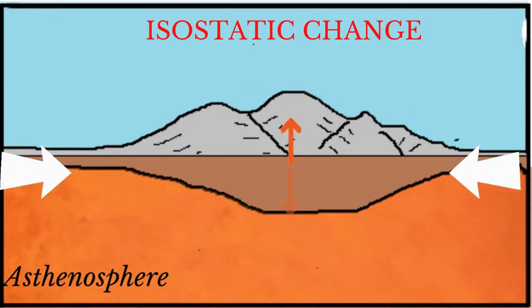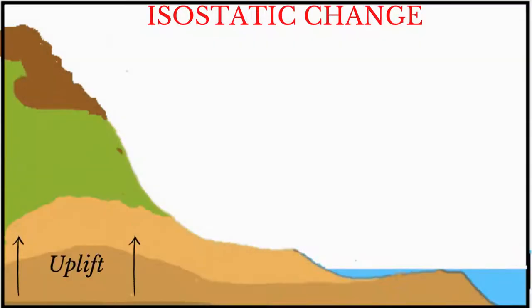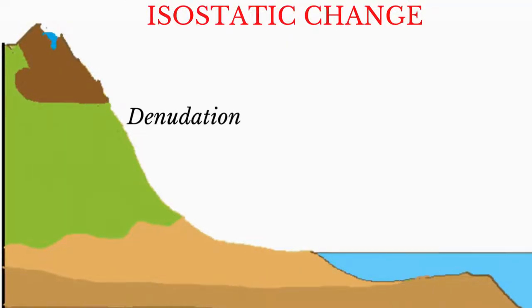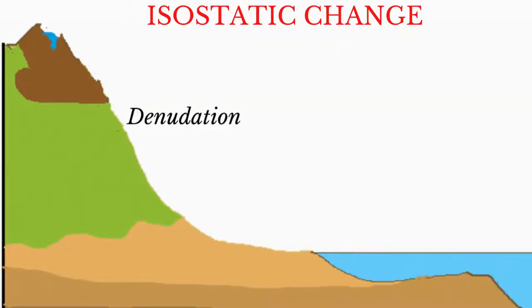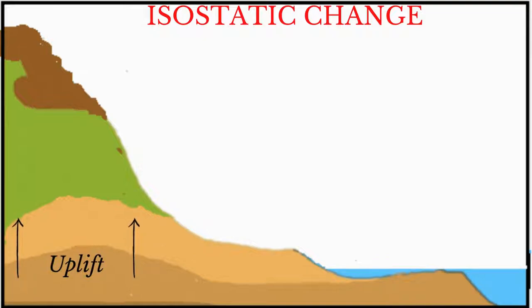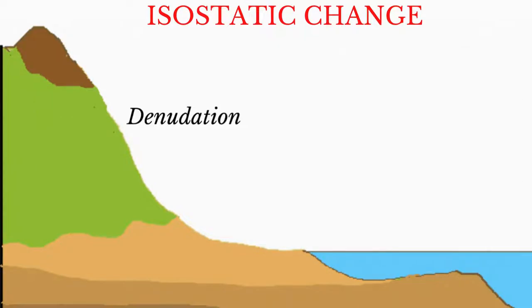Isostatic change also results from plate tectonics. For example, at convergent plate margins, sediments at the edge of continental plates are compressed and pushed upwards to create fold mountains, thus the land is uplifted in the process. Denudation, or the lowering of the land due to erosion, weathering and mass wasting, may also decrease the weight on the land. This causes material from the lower crust and/or upper mantle to be pulled upwards. This is another example of isostatic rebound and is similar to the Earth's response following the removal of large glacial ice sheets.